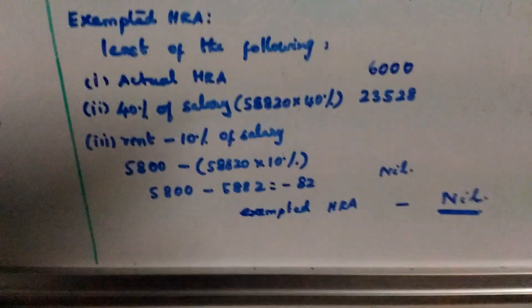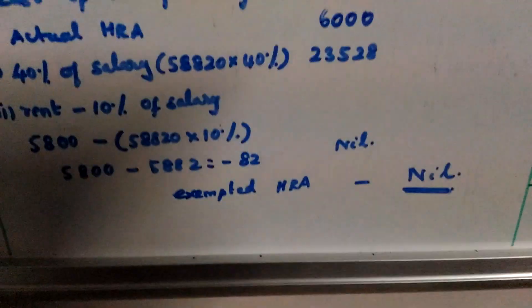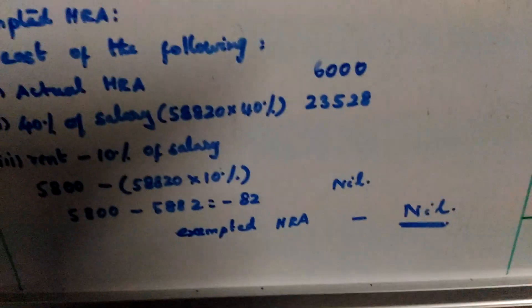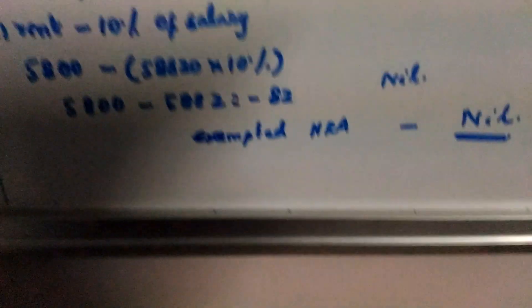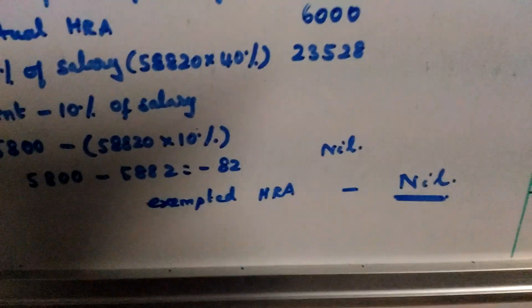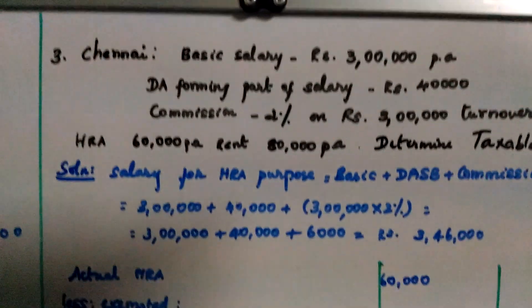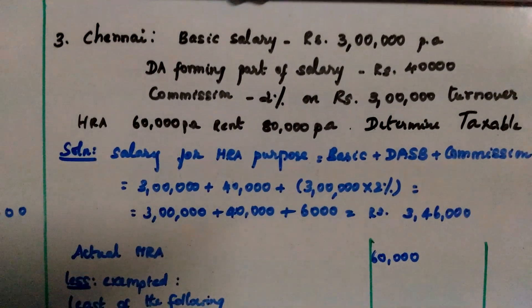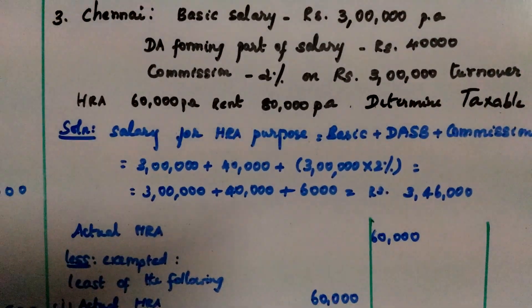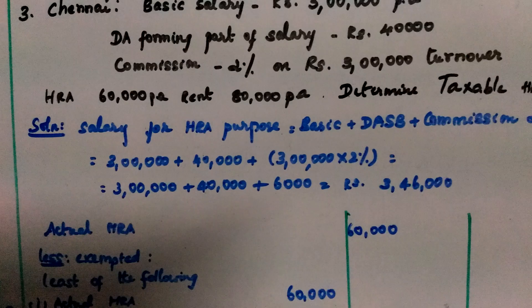If the result is positive we take it; if negative, we take zero — giving us approximately $4,000. The minimum of the three values is the exempted HRA. Next problem: basic salary is Rs. 3 lakhs per annum. DA forming part of salary is Rs. 40,000. Commission is 2% on Rs. 3 lakh turnover.